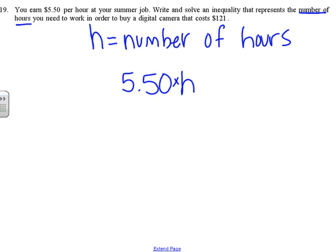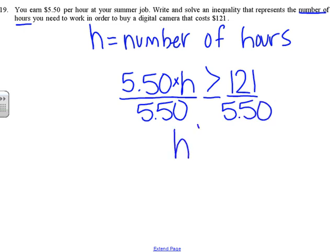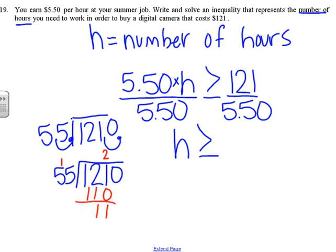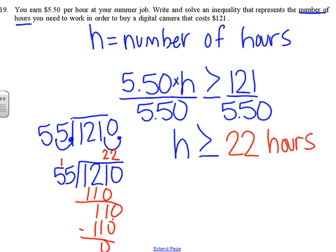We need to get at least $121, so 5.5H is greater than or equal to 121. Divide by 5.5 on each side. 121 divided by 5.5 — multiply by 10 to get 1,210 divided by 55. 55 goes into 121 twice, and 55 goes into 110 twice again. So H is greater than or equal to 22 hours. Interpreting: you must work at least 22 hours.